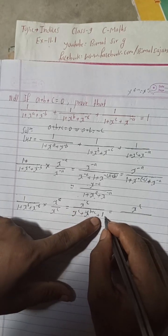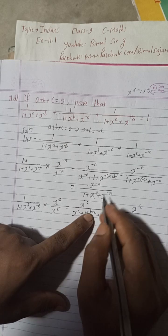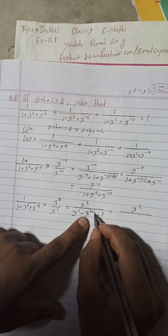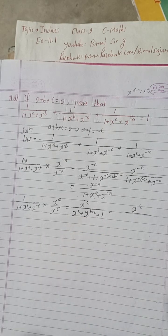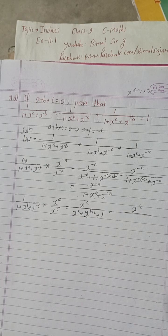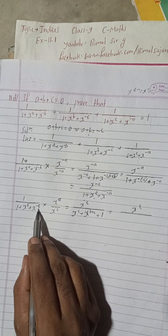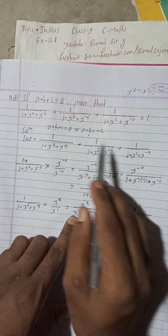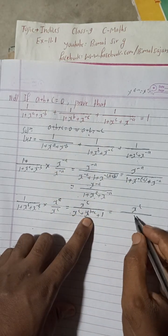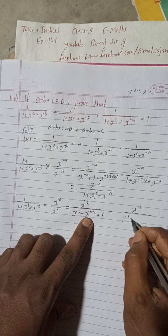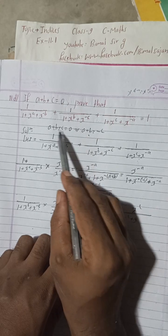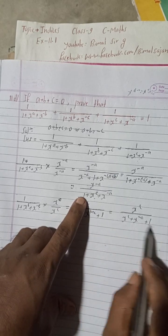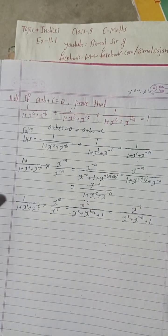Now b plus c: since a plus b plus c equals 0, b plus c equals minus a. So x^(b+c) becomes x^(-a). The denominator is now x^c plus x^(-a) plus 1, which is 1 plus x^c plus x^(-a). The numerator is x^c. So the second term is x^c divided by (1 + x^c + x^(-a)) — same denominator form.